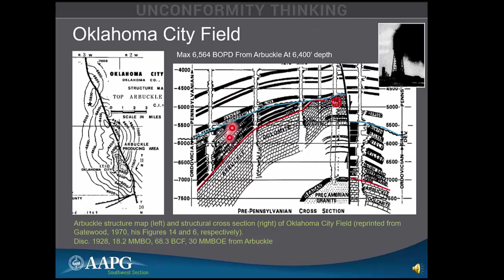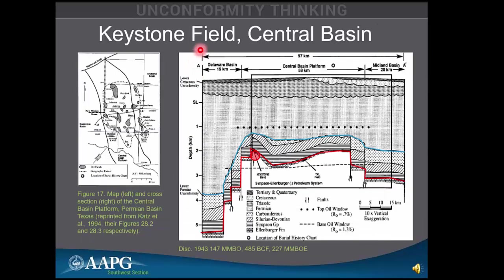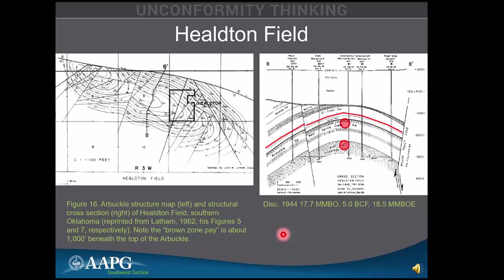Oklahoma City Field — giant anticline. The red line represents that Sauk-Tippecanoe unconformity and the pay up here. There is another unconformity — the pre-Penn unconformity. It's not uncommon on some of these large structures to have multiple unconformities, and karst that gets activated gets reactivated. This particular discovery well in Oklahoma City Field made 6,500 barrels of oil a day — that's the kind of thing that can happen in the Arbuckle-Ellenberger-Knox. Keystone Field, Central Basin, is another example — a major structural uplift. Many of the fields on the Central Basin Platform; this one happens to be 147 million barrels and half a TCF — a very significant field.